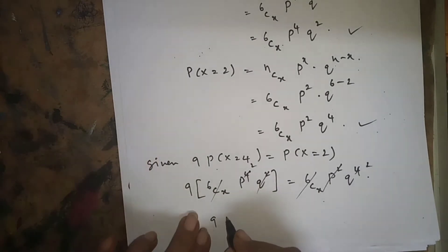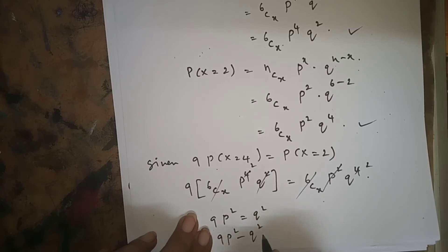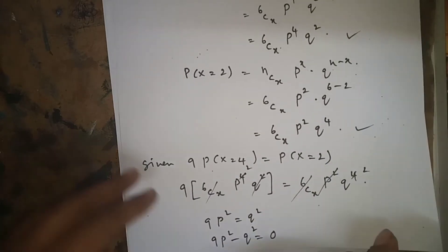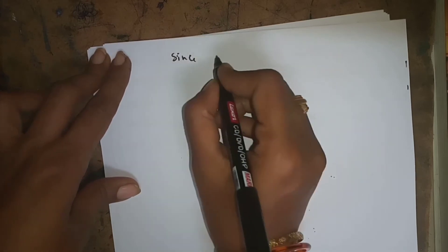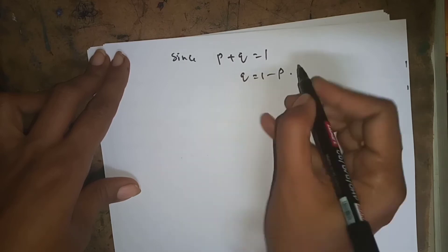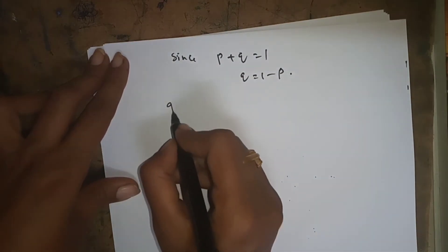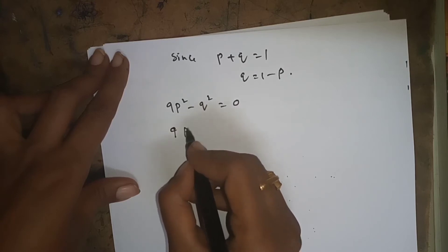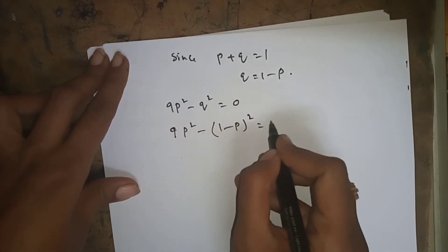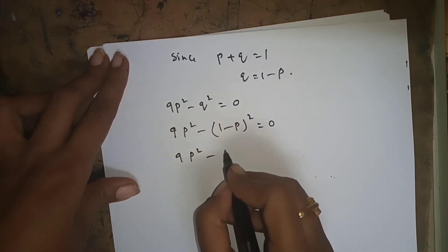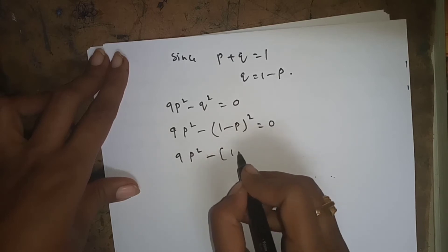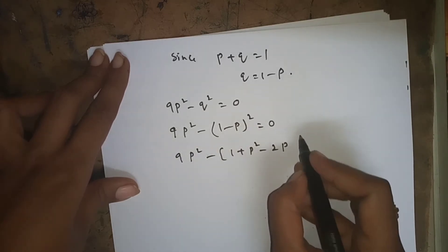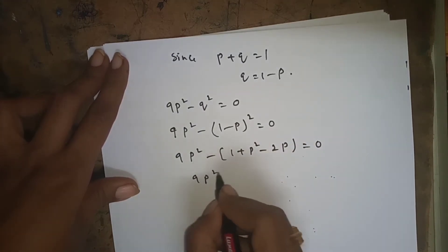After cancellation we get 9p^2 = q^2, so 9p^2 - q^2 = 0. Since p + q = 1, q = 1 - p. Substituting: 9p^2 - (1-p)^2 = 0, which expands to 9p^2 - (1 + p^2 - 2p) = 0.